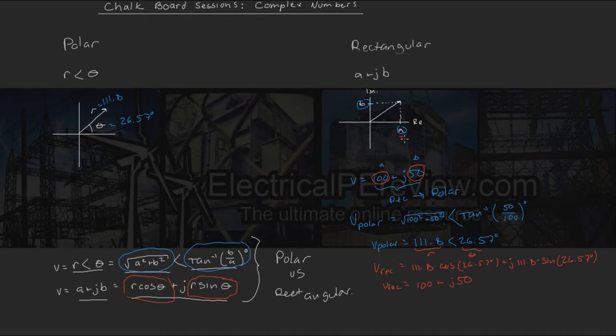So this value down here, a, would equal 100. B, right here, would equal 50.